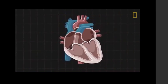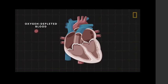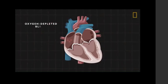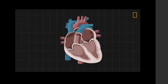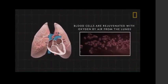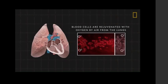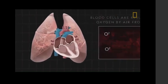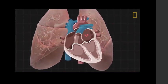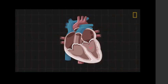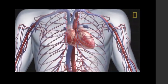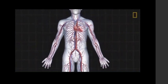The pumping cycle starts when oxygen-depleted blood returns to the heart after circulating throughout the body. The blood enters through the right atrium before flowing to the right ventricle, and is then pumped to the lungs via the pulmonary arteries, where blood is rejuvenated by air that's breathed in. The oxygen-rich blood returns to the heart through the left atrium, goes to the left ventricle, and by way of the aorta is pumped throughout the body before the process repeats.